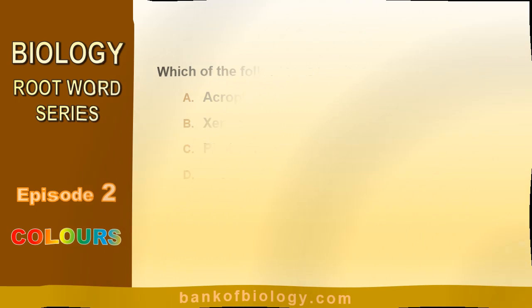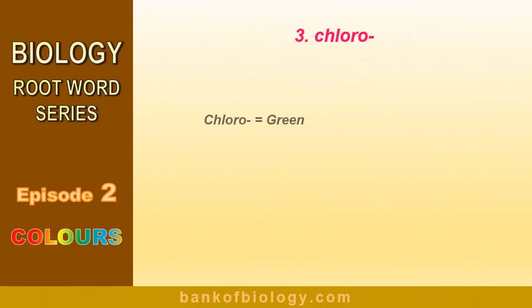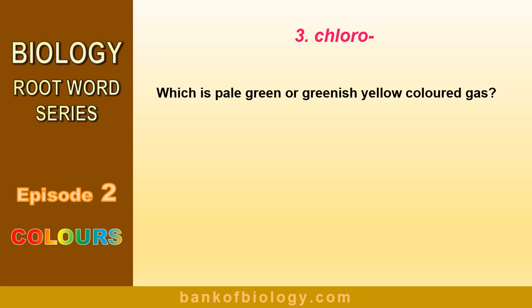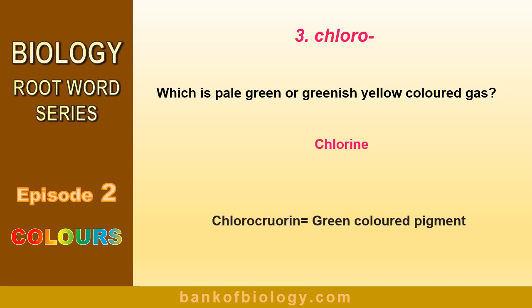Now let us analyze the third prefix: chloro. Chloro means green. For example, chlorophyll is a green pigment in plants. Which is the pale green or greenish-yellow colored gas? The answer is chlorine. So chloro is also related to the element chlorine. In the first episode, we mentioned a pigment chlorochlorine — it's green, a pigment found in annelids, and when oxygenated it becomes red.